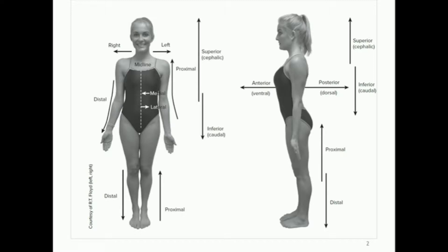We have a midline of the body — this dashed white line is the midline. If something is closer to the midline, we call that medial. If it's further away from the midline, we call that lateral. One of the most medial landmarks would be the belly button or the umbilical region.